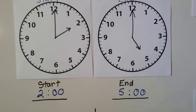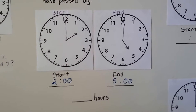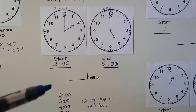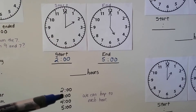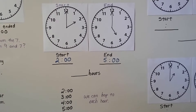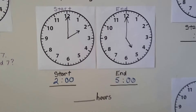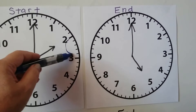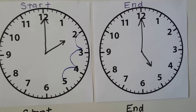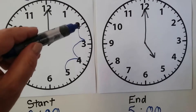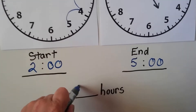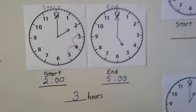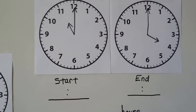How much time has elapsed? How many hours have gone by? We can count by the hour — starting at two o'clock, we hop: three o'clock, four o'clock, five o'clock. We made three hops, so three hours have elapsed.